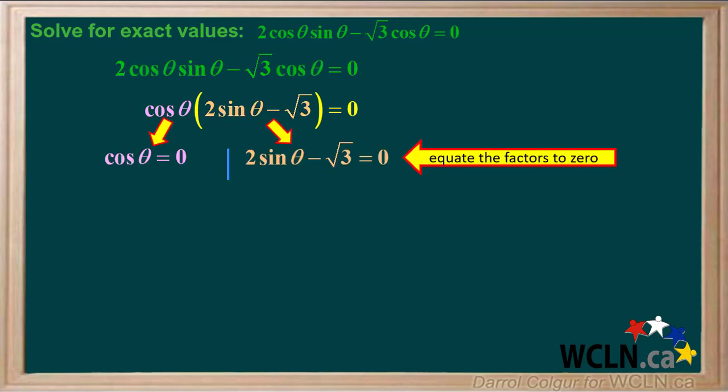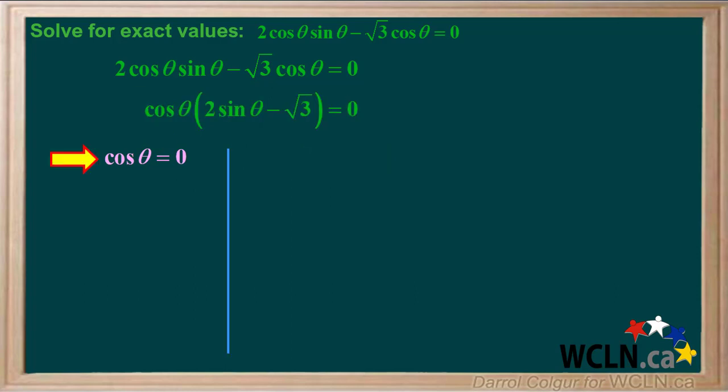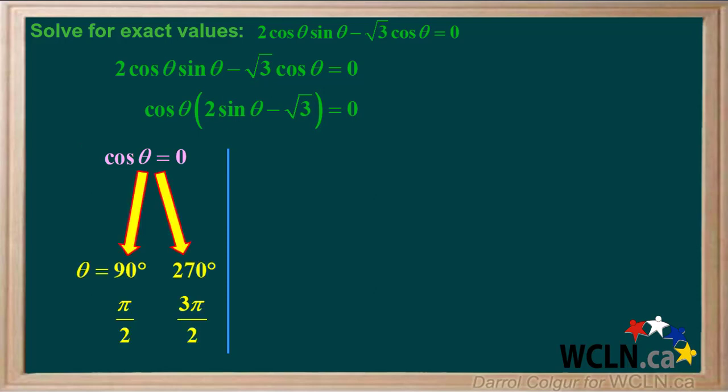We'll solve this equation by equating both factors to 0. Starting with the factor on the left, cosine theta equals 0. The two angles that have an exact cosine of 0 are 90 degrees, which is pi over 2 radians, and 270 degrees, which is 3 pi over 2 radians.